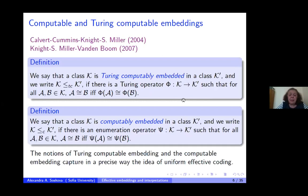The definition is the same as for Borel operators, but in the first case the operator is a Turing operator, and in the second case it is an enumeration operator — they call it computable embedding. Every time a class is computable embedded in K prime, it is Turing computable embedded, but the opposite is not always true. I shall concentrate on Turing computable embeddings.